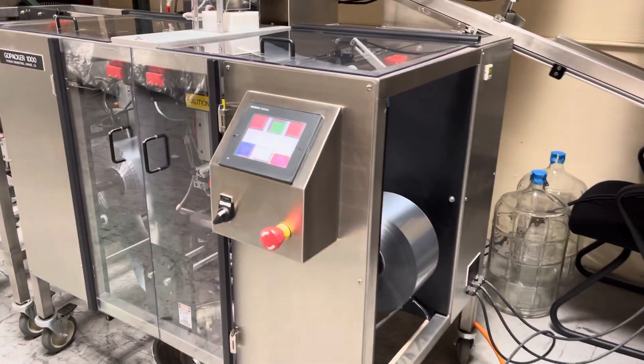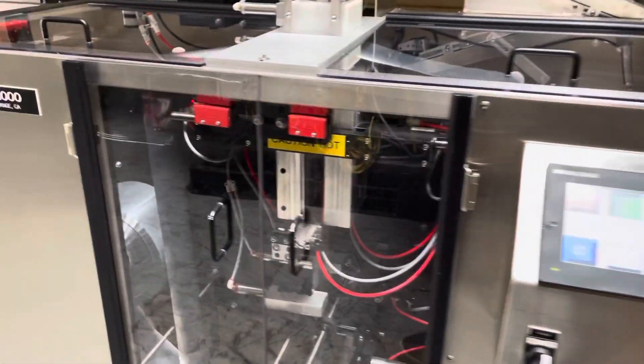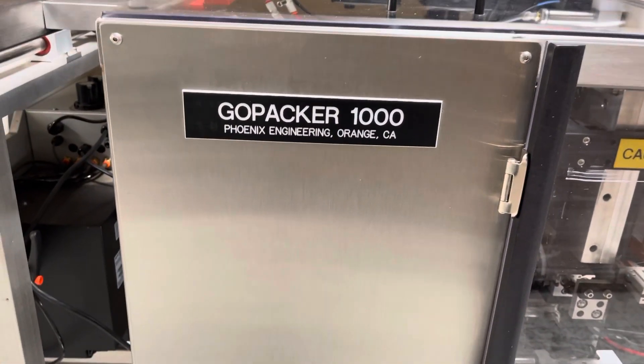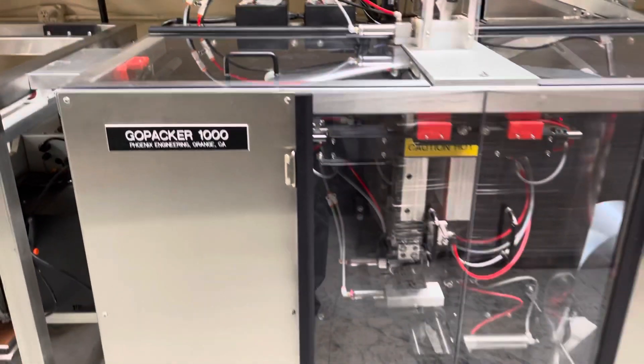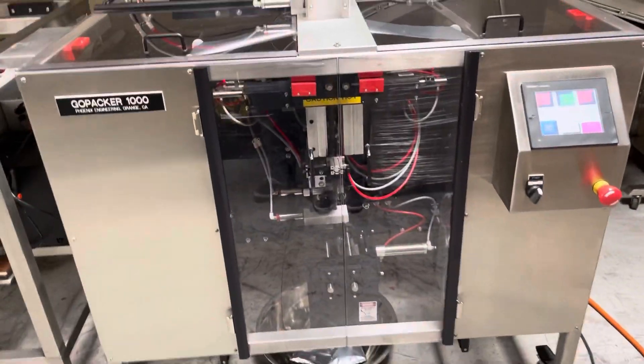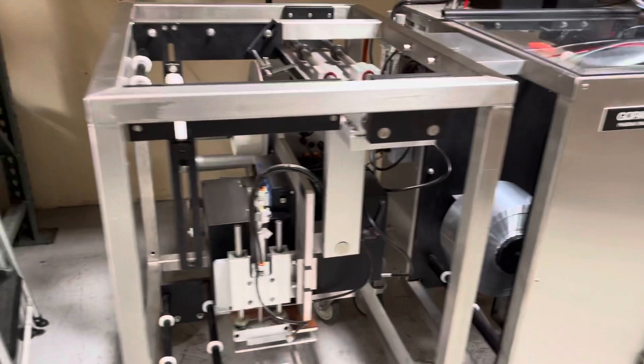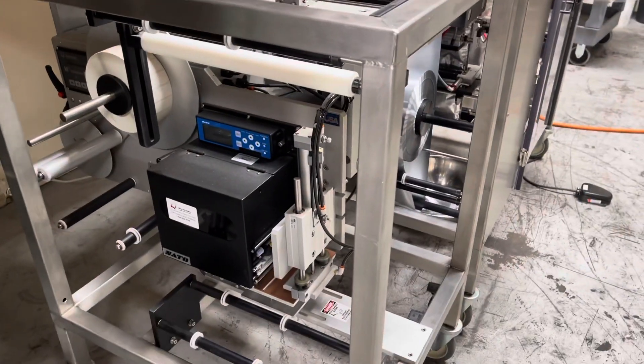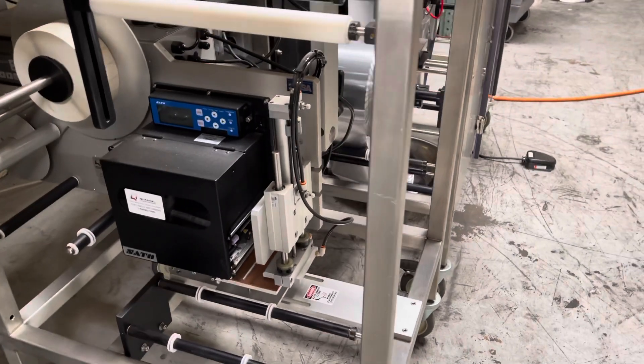I'm going to demo the Phoenix Engineering Gold Packer 1000. This unit is set up to run a pouch. It also has a printer as well with a label applicator.